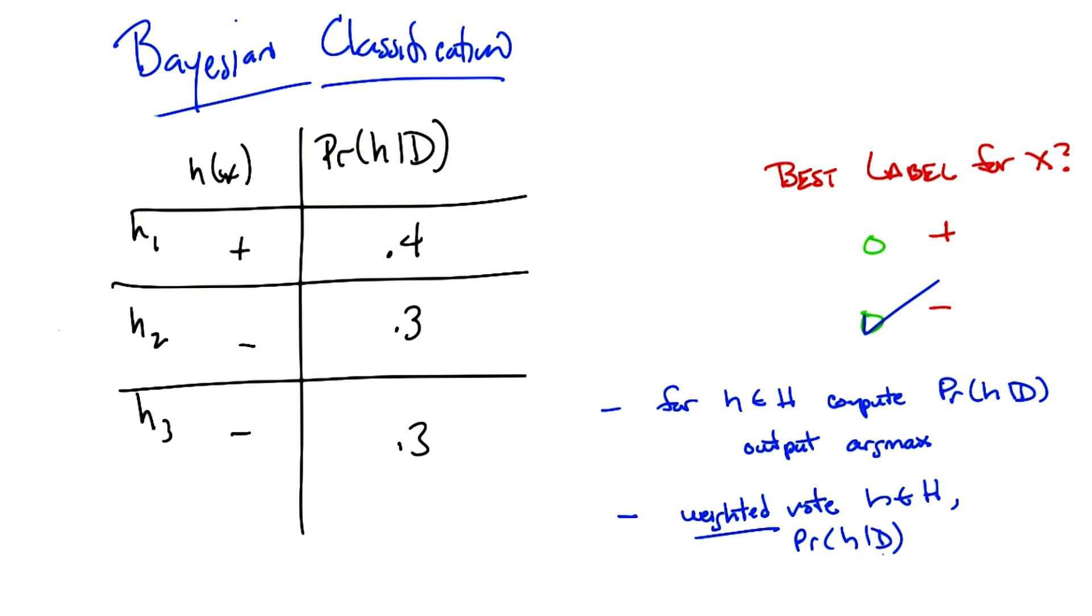So, if you can only output a hypothesis and use that hypothesis, in fact, you would say plus. But if you asked everyone to vote, just like we did with boosting, just like we did effectively with KNN, and all these other kind of weighted regression techniques we've used before, you need to do the voting.